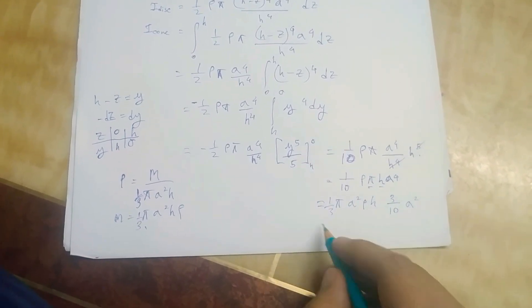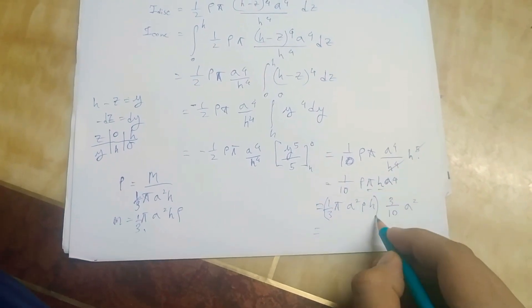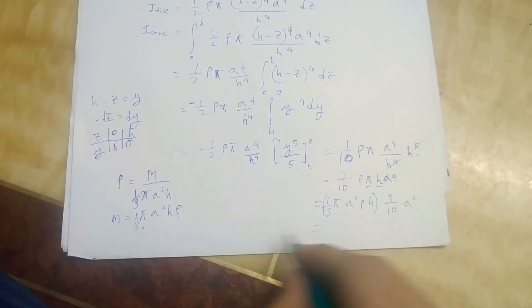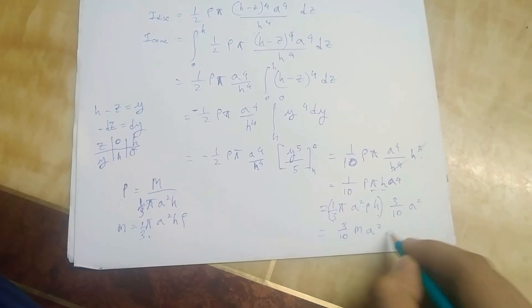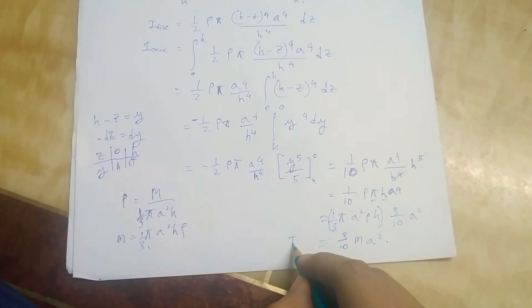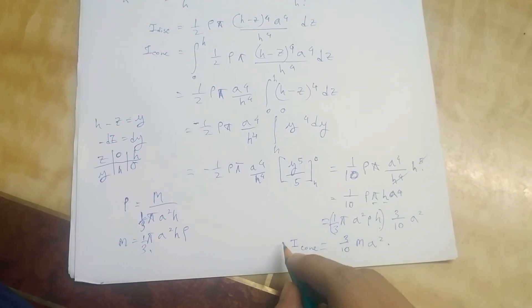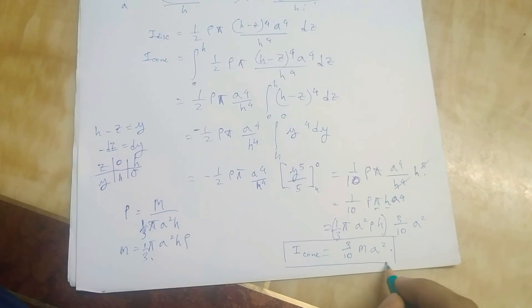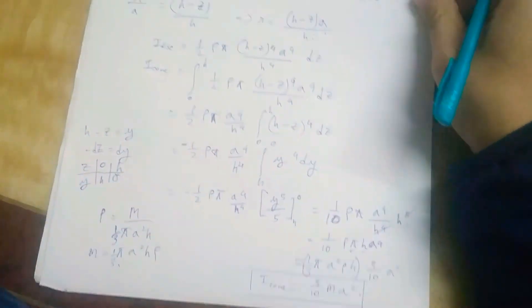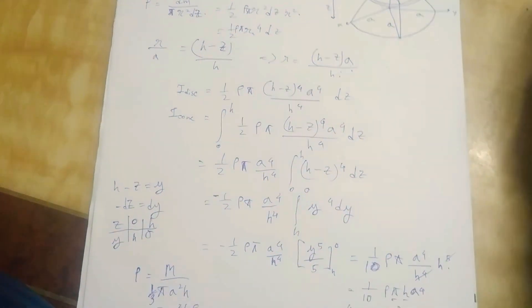And a squared, now this total, this term total is equal to m, so we will get 3 by 10 m a squared, which is the moment of inertia of the cone which is rotating about its own axis. So this is it.